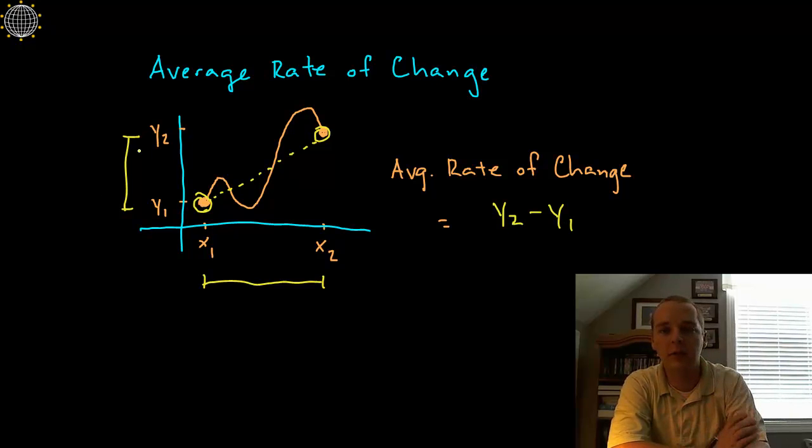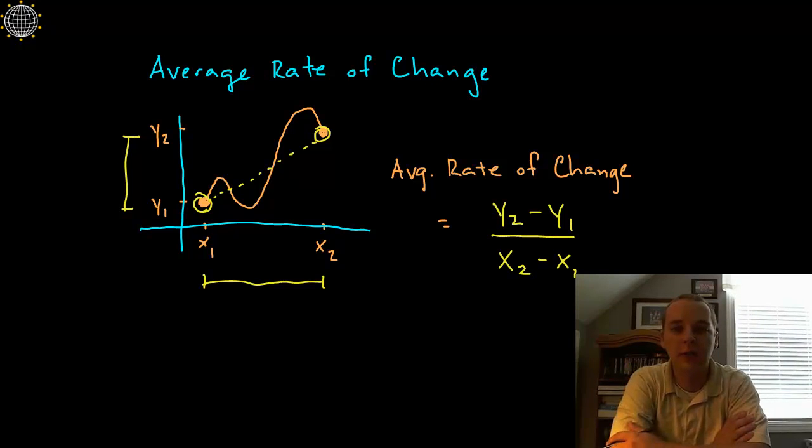Divided by x₂ minus x₁, and that would be your horizontal change, so that would give you the average rate of change over the entire interval.